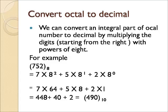So it is 7 into 64, plus 5 into 8, plus 2 into 1 — because 8 raise to 0 is 1. That gives us 448 plus 40 plus 2, equal to 490. So 752 to the base 8 is the octal number and the equivalent decimal is 490 to the base 10.